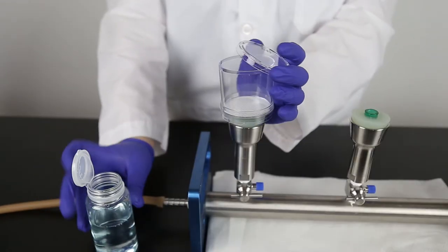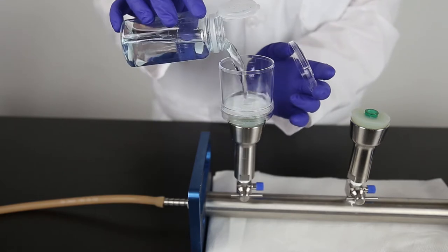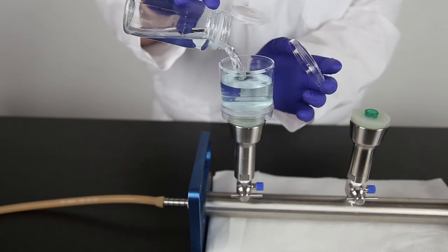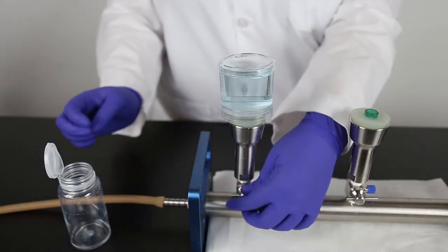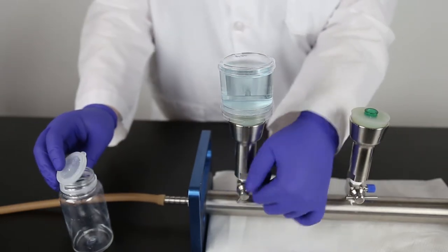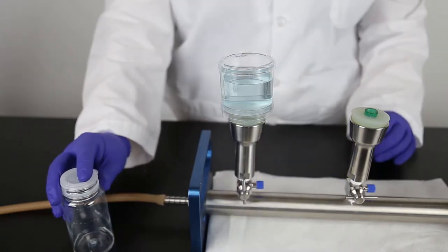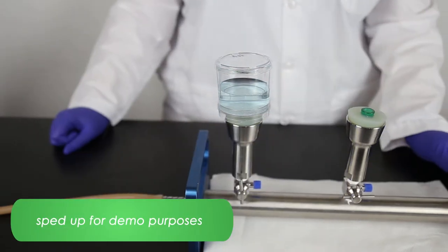Next, remove the monitor cover from the Neogen filter and aseptically pour your sample onto the membrane. Immediately place the cover back onto the monitor to prevent contamination. Open the valve and apply vacuum pressure. Allow the entire sample to be drained from the monitor.